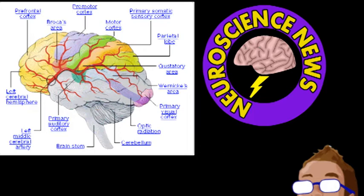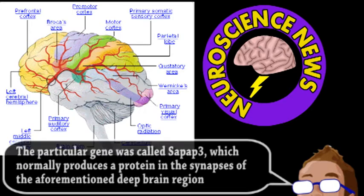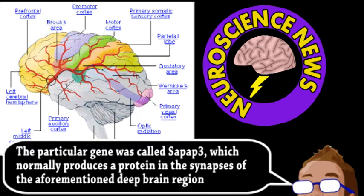Removing a particular gene related to this region caused the mice to obsessively groom themselves, even so much that they caused skin lesions. Imaging from the mice's brains revealed a lack of inhibition and therefore an overexpression of specific neurons that led to the repetitive behavior.